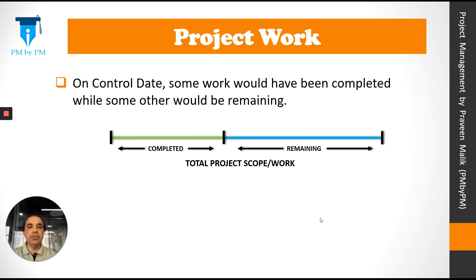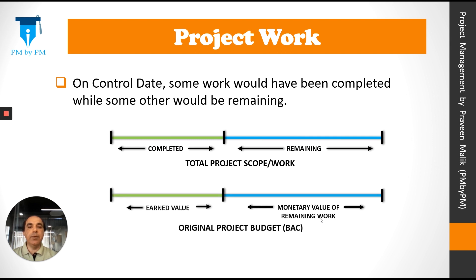Let's understand it with the help of a diagram. On the control date, some work would have been completed while some other work would be remaining. The monetary value of the completed work can be expressed as earned value or EV, and the monetary value of the total work can be expressed as budget at completion or BAC.